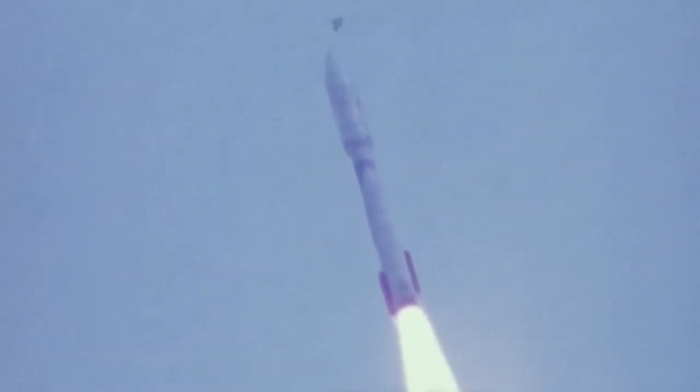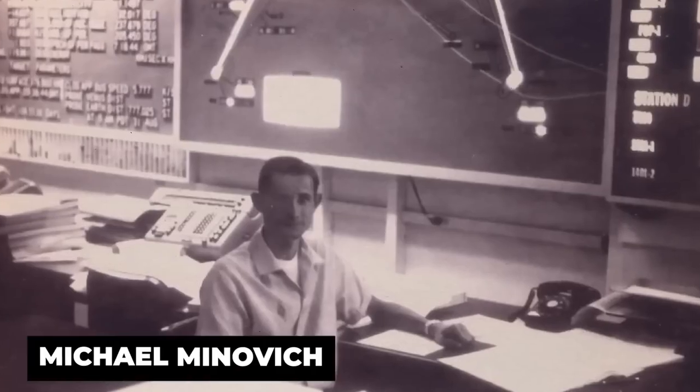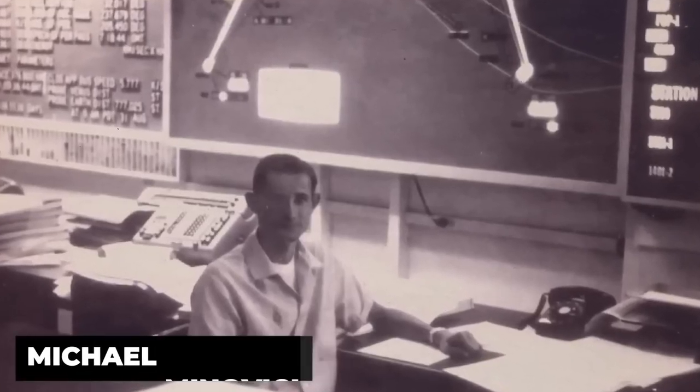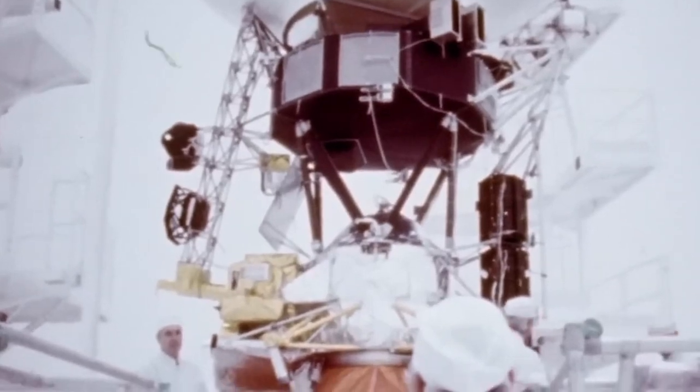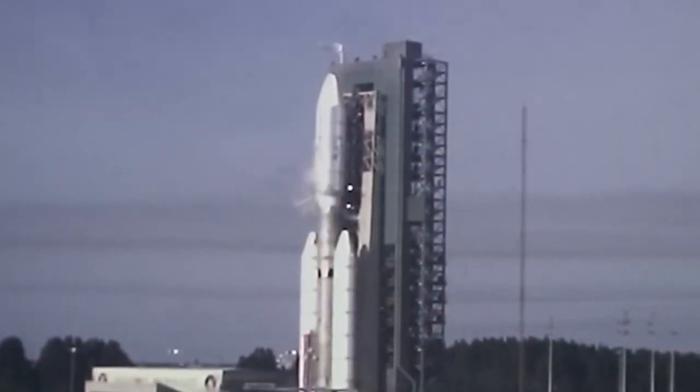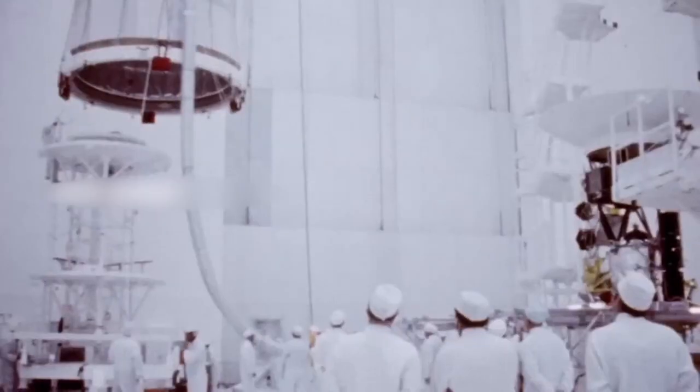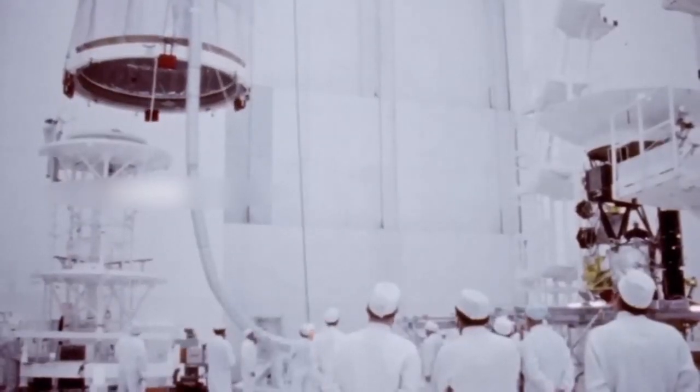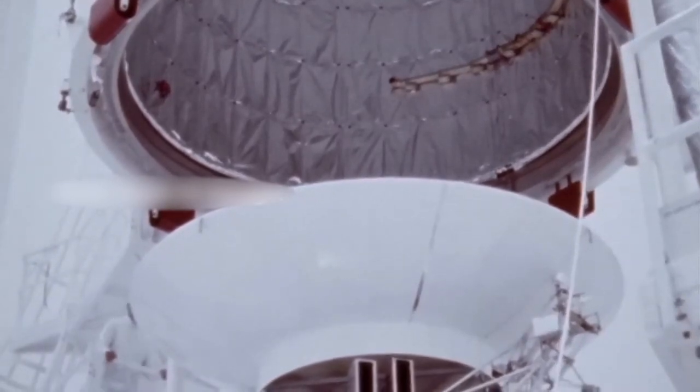The Voyager mission began by pure accident when Michael Minovich realized that a spacecraft could piggyback on the velocity of a planet and catapult further out into the solar system. This lent the first plans for the probe being carried out, and the Voyager mission was originally intended to span five years.